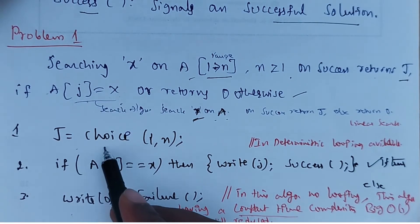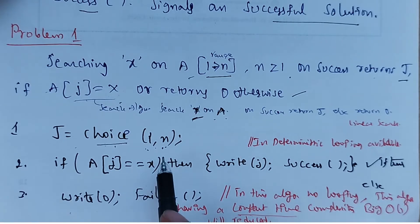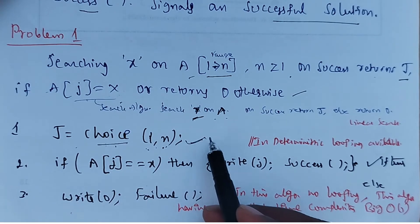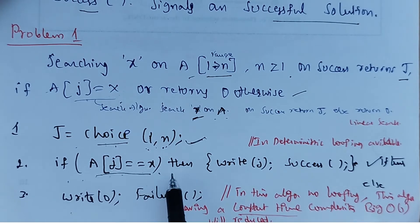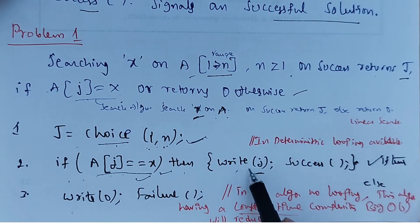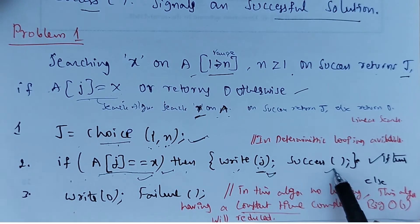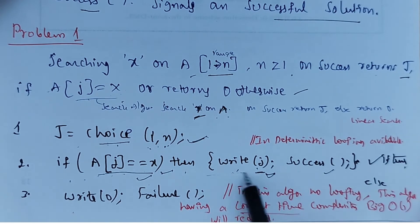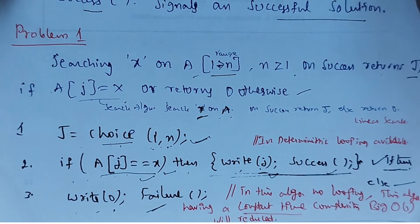If the condition is true, it means j is found, so we print output j. When the successful function condition is true, this message is printed. Else, write 0, which is the failure message. It is a very simple non-deterministic algorithm problem.